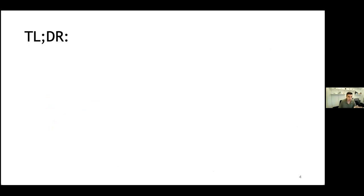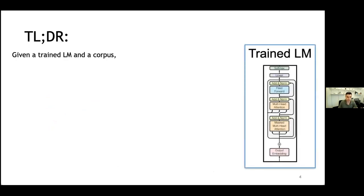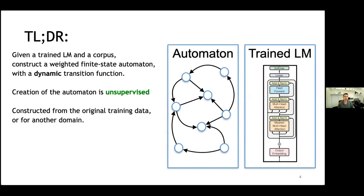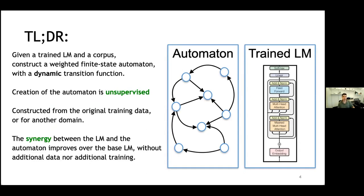Today I'm going to talk about how we can take a trained language model and, given this trained language model and a corpus, construct a finite state automaton that has a dynamic transition function. The creation of this automaton is completely unsupervised and it can be constructed either from the original training set or from another domain. The synergy between the language model and the automaton improves over the base language model without additional data or additional training.